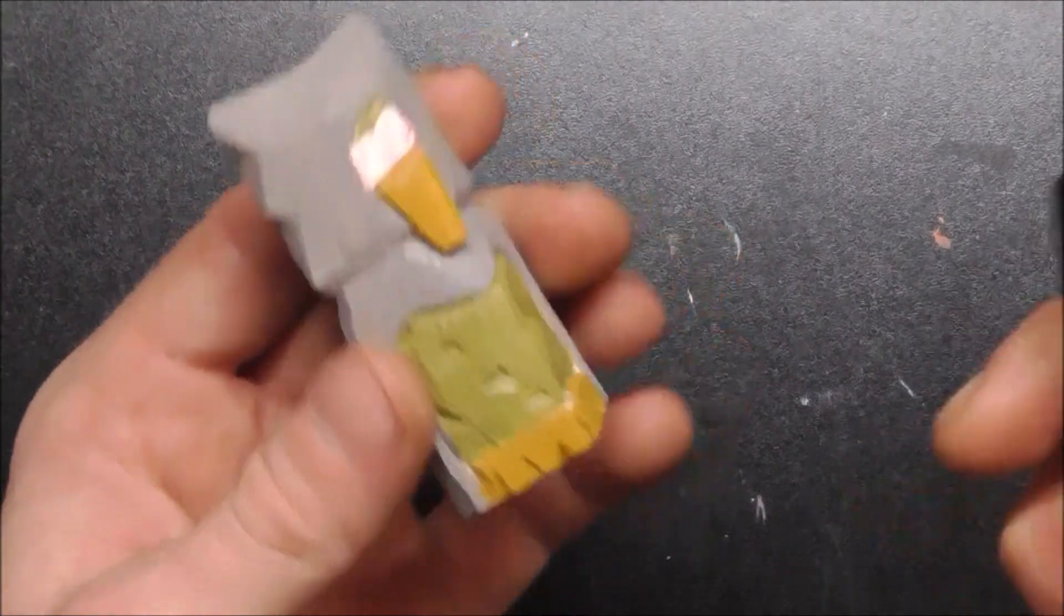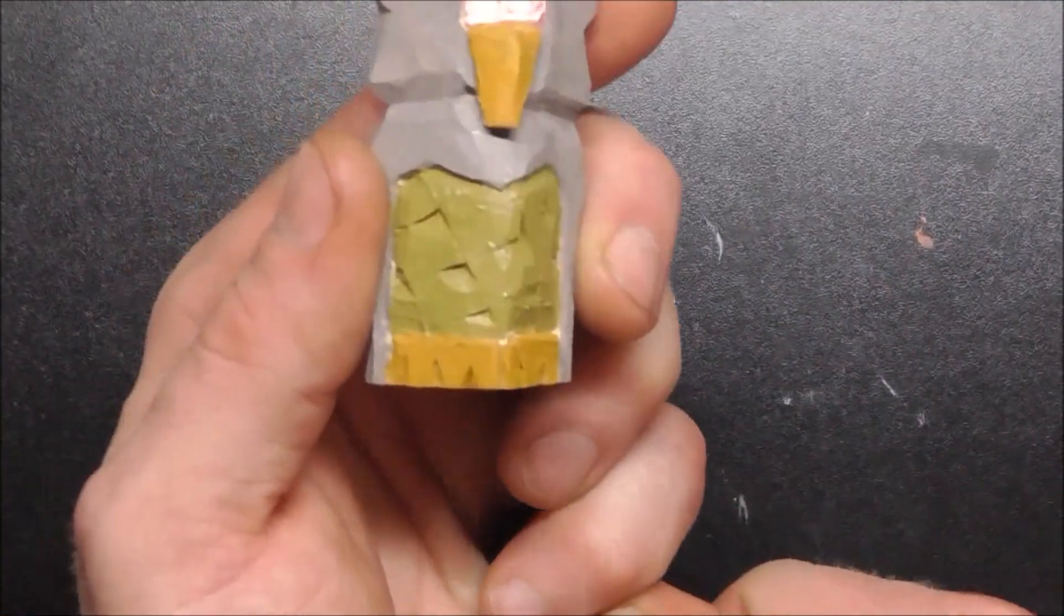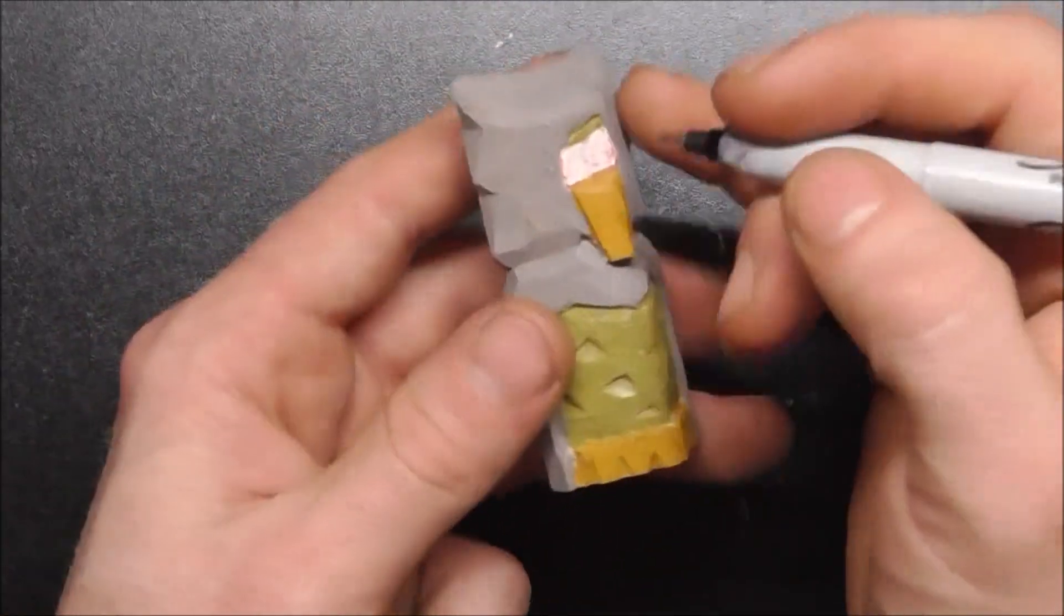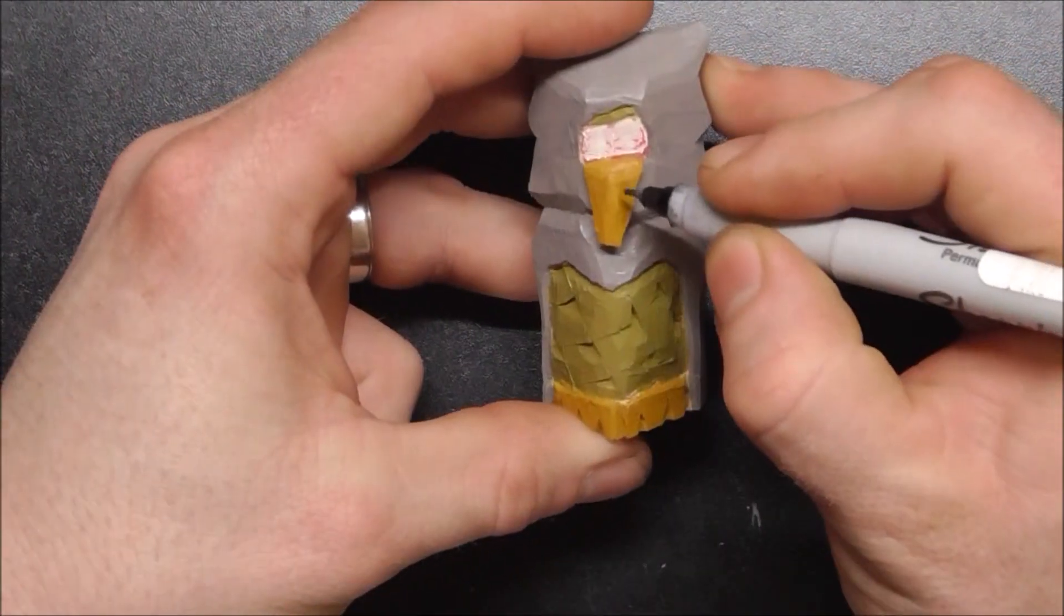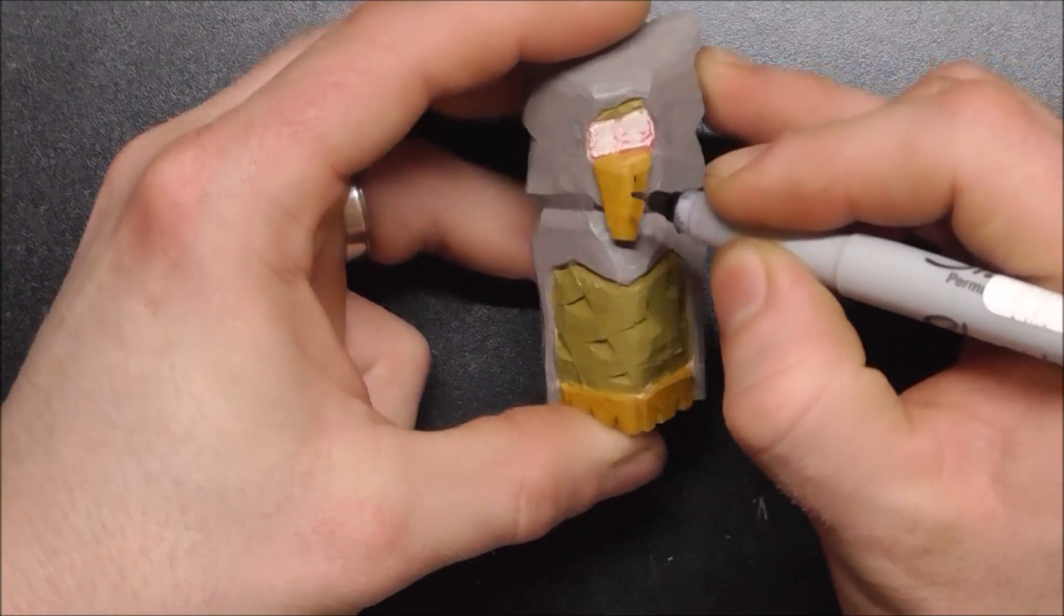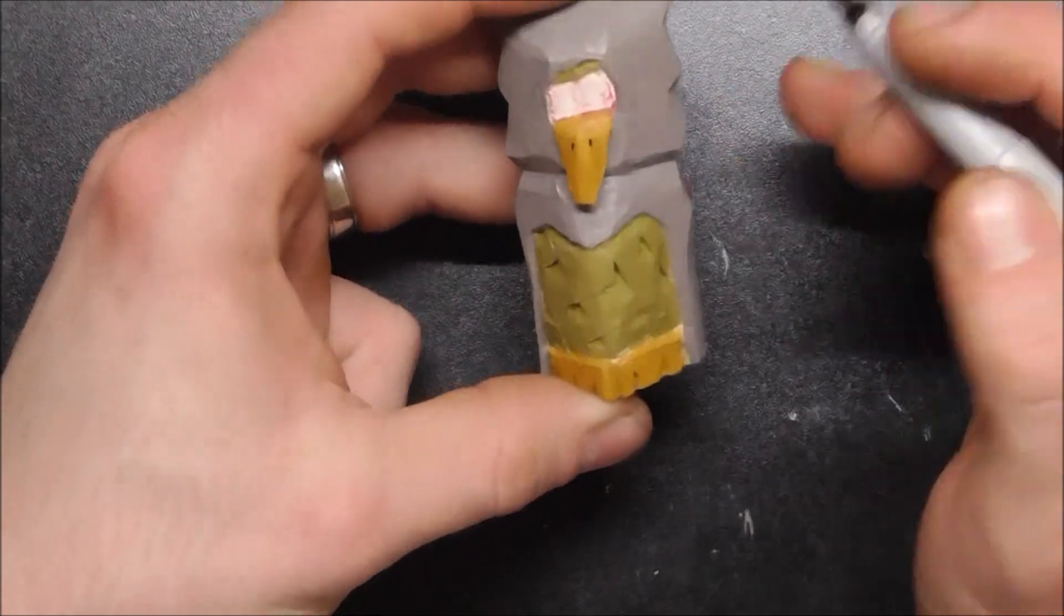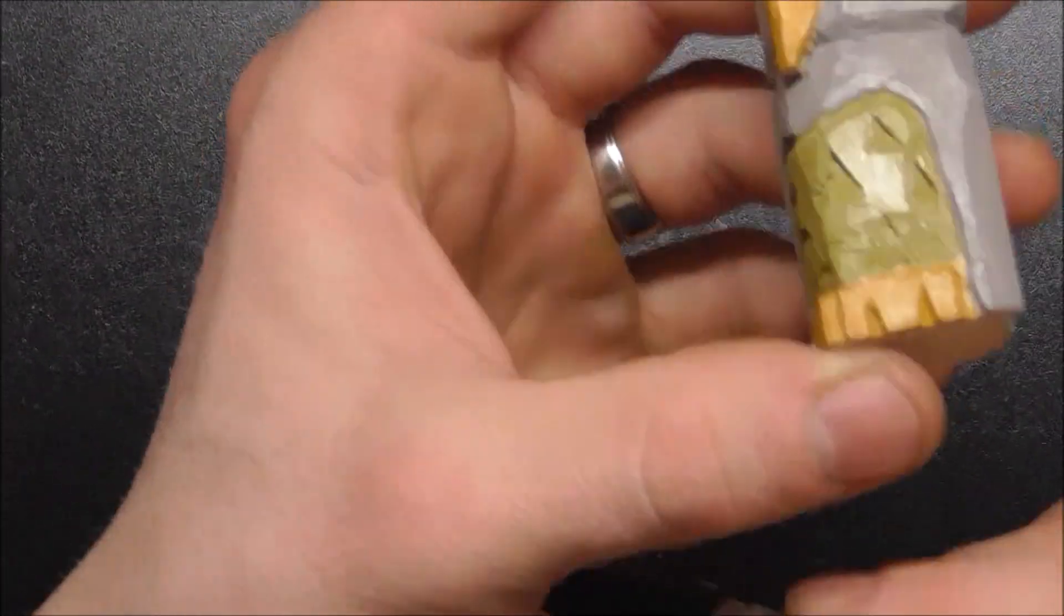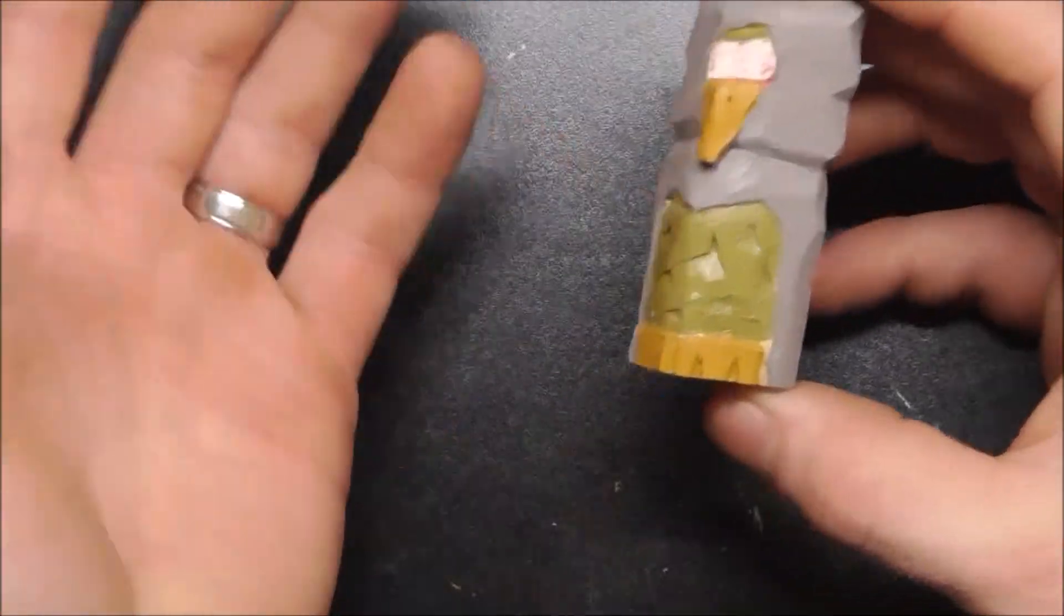And then if you want, you could use paint or a fine point sharpie. Just make a couple little nostril holes up here to allow it to breathe, even though it doesn't really need to I guess when it's a zombie. But it used to. So paint works fine with that. I just find marker, fine point sharpie, just a lot easier to manage.